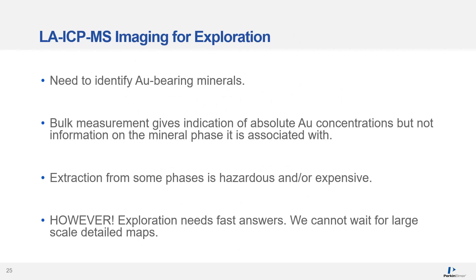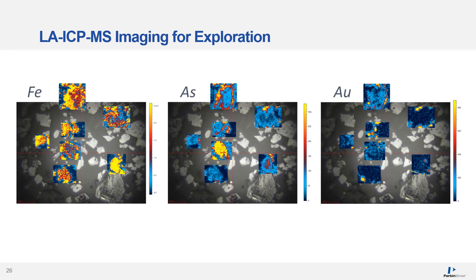We all know there is a need to simplify the identification of gold-bearing minerals. The bulk measurement gives us the total gold concentration but no information on the mineral phase that it is associated with. In addition, during some exploration activities, we need fast answers and cannot wait for detailed mapping data. Here, the Dual Concentric Injector was used to image gold distribution in concentrates from porphyry-style deposits. The faster washout that this injection system provides results in better resolution in the images, and only small regions need to be imaged to gather enough information on the elemental distribution.